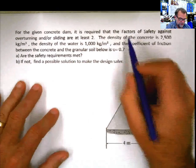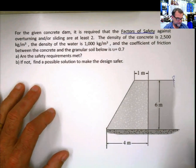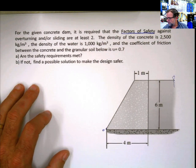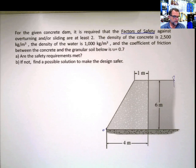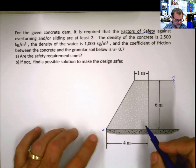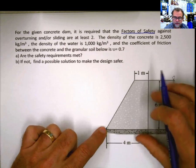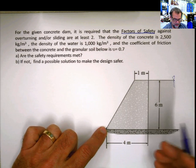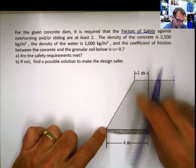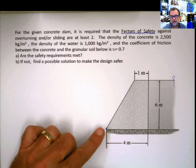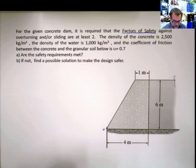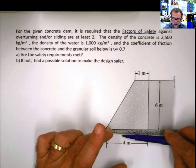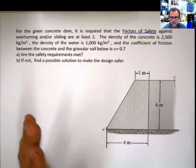Factor of safety is a very interesting concept. The factor of safety for overturning, let's say this is point O, is defined as the ratio between the moments that are trying to keep this in place — the stabilizing moments — and the moments that are trying to make it overturn with respect to that point. Sliding is the same: how much bigger is the friction force compared to the water's push — that's the factor of safety for sliding.